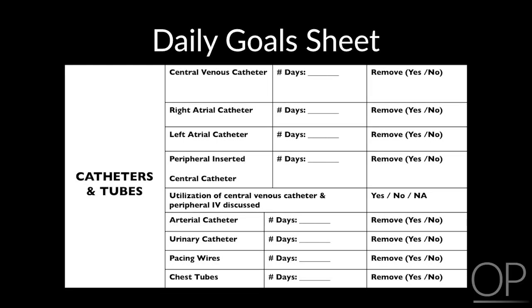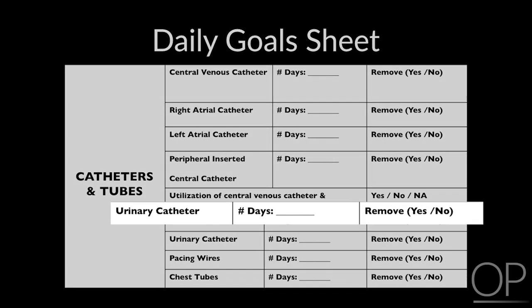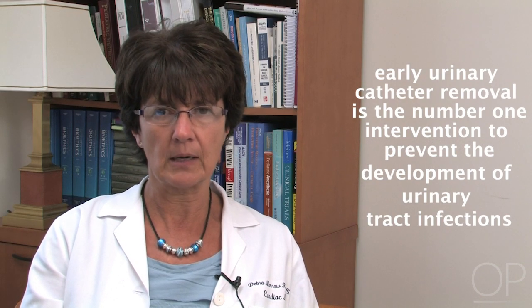The use of a daily goals sheet, which includes a section on indwelling catheters, is a powerful reminder to doctors and nurses to assess the continued need for the urinary catheter every day. Our daily goals sheet contains a column that identifies the number of days the catheter has been in place. And if a catheter must remain in place, the daily goal addresses strategies for catheter removal. Early urinary catheter removal is the number one intervention to prevent the development of urinary tract infections.